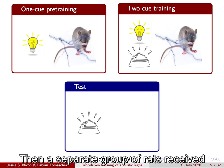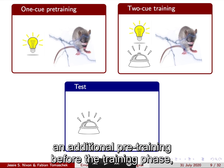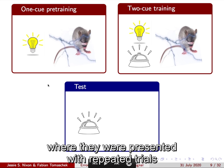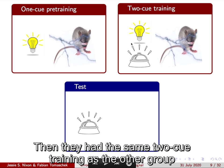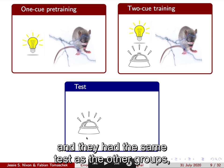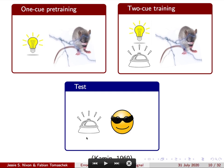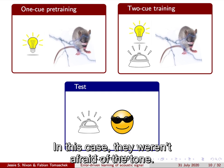Then a separate group of rats received an additional pre-training before the training phase where they were presented with repeated trials of just one of the cues. So just the light followed by the electric shock. Then they had the same two cue training as the other group and they had the same test as the other group. So just the tone. In this case, they weren't afraid of the tone.